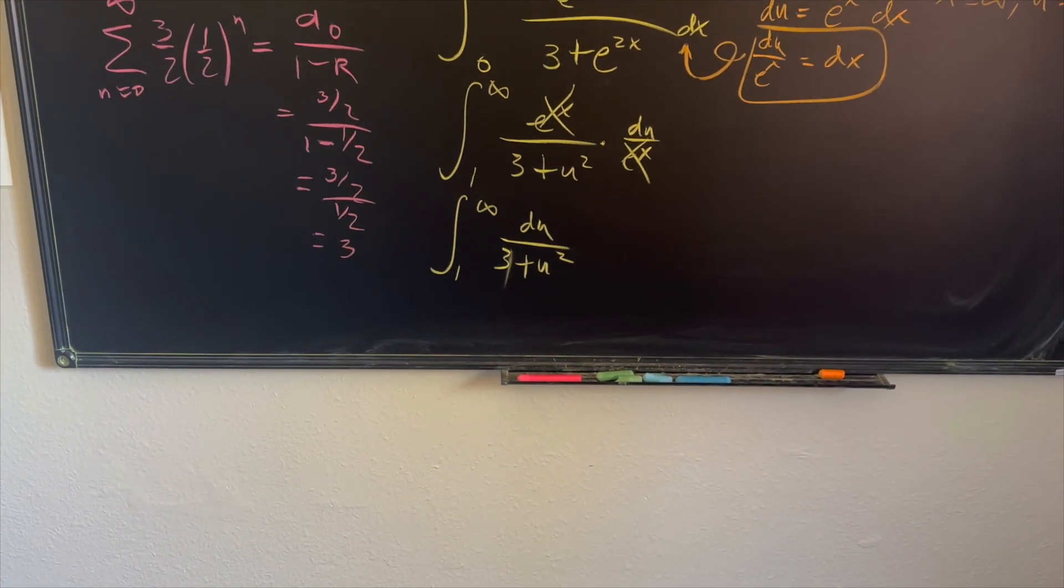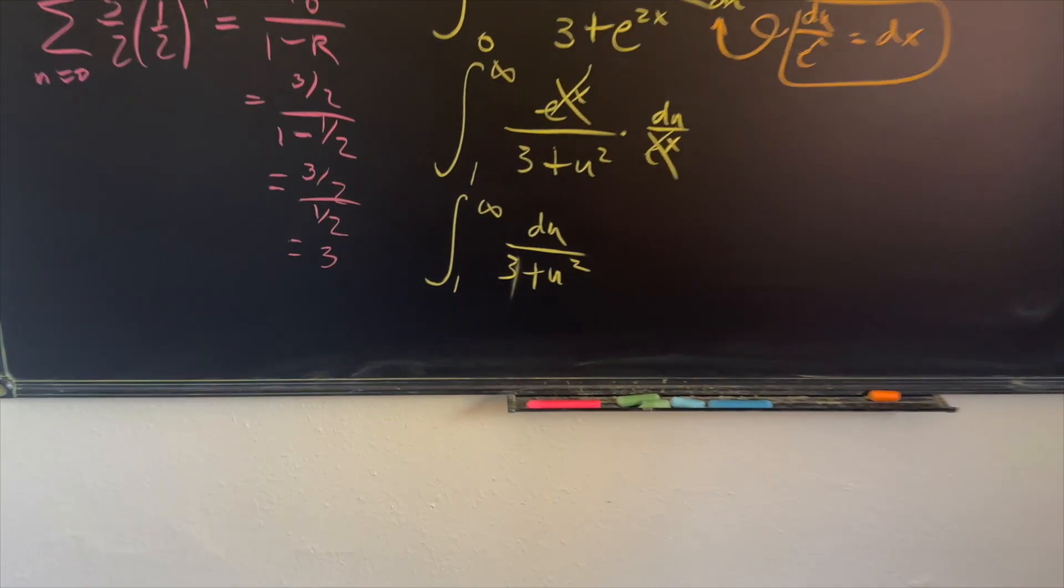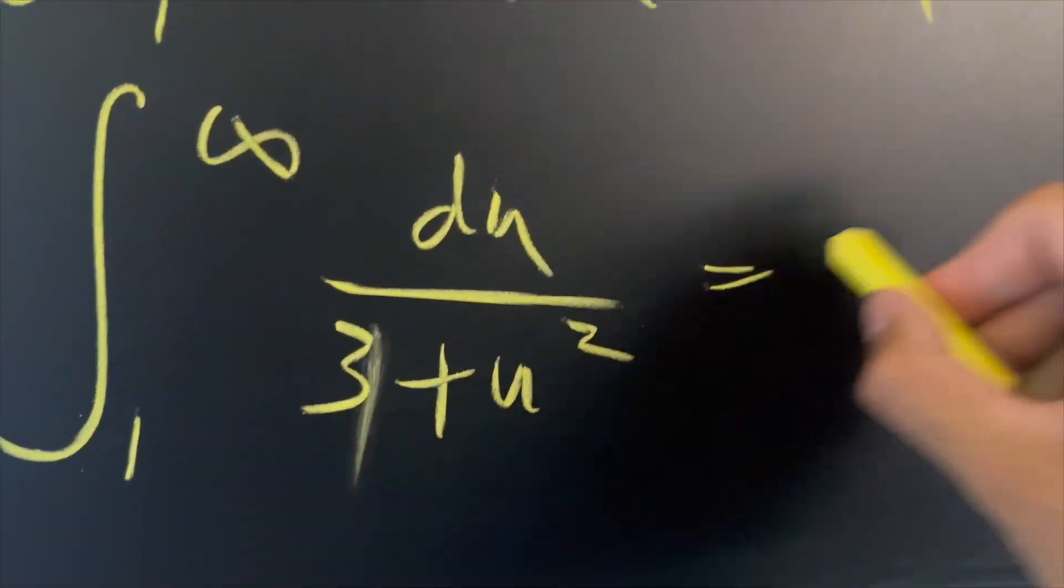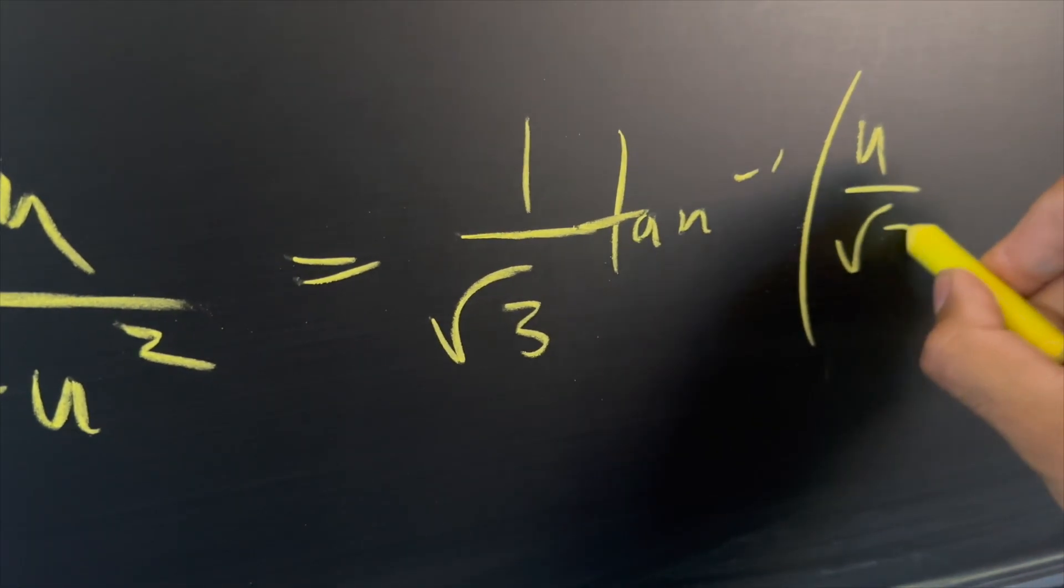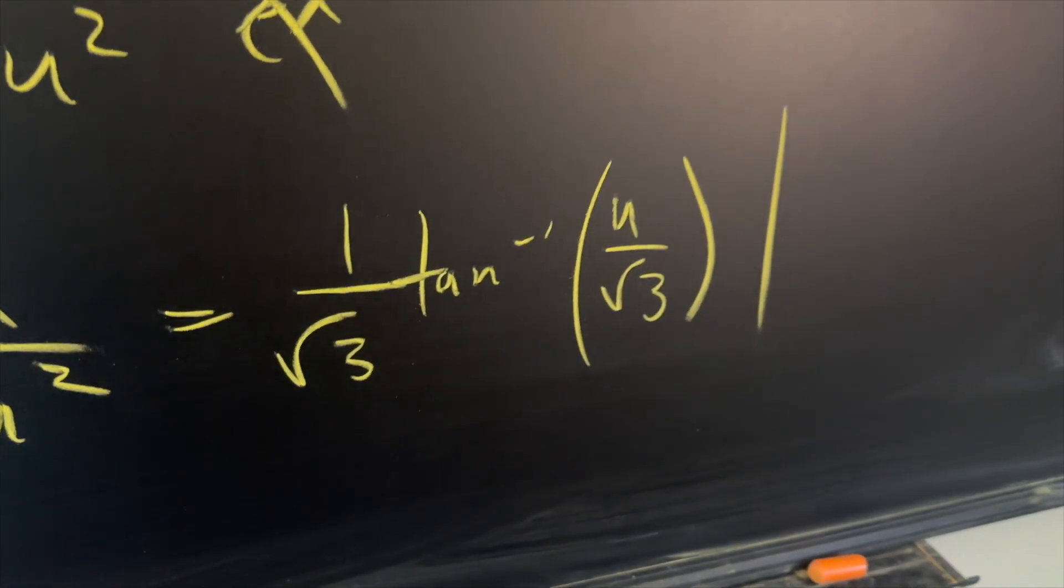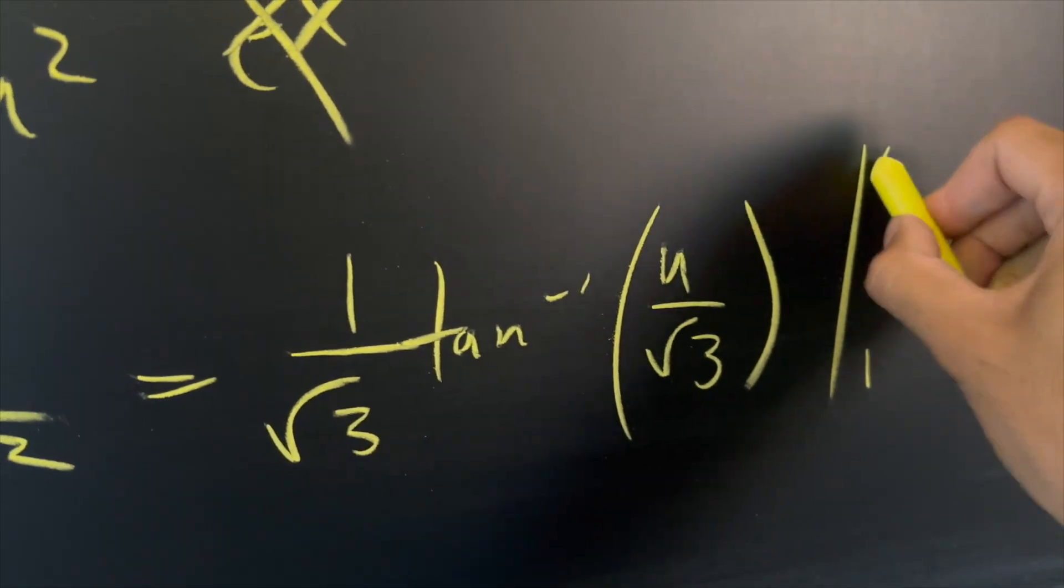I hope you recognize this as a simple arc tan integral, which is going to become one over root three tan inverse of u over root three. And then we're implementing the first fundamental theorem of calculus from one to infinity.